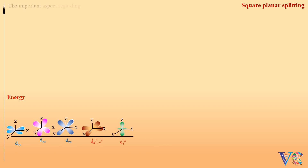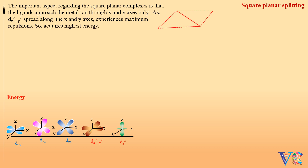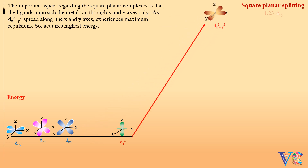The important aspect regarding the square planar complexes is that the ligands approach the metal ion through the x and y axes only. As dx²-y² orbital is spread along the x and y axes, it experiences maximum repulsions, so it acquires the highest energy. Next, dxy has lesser energy than dx²-y², because the lobes of the orbital are spread in between the x and y axes.